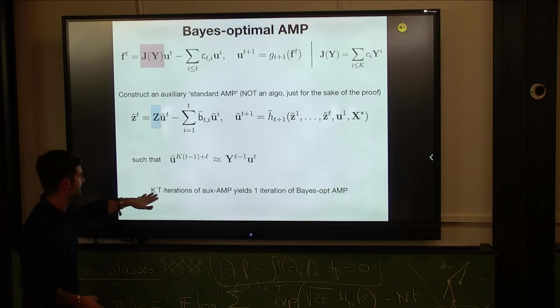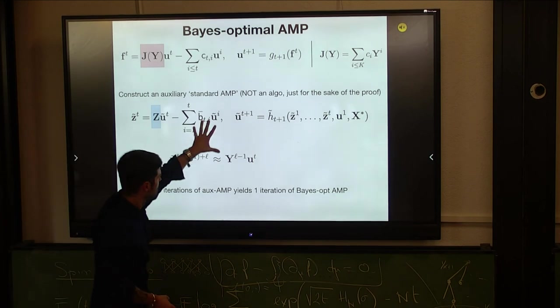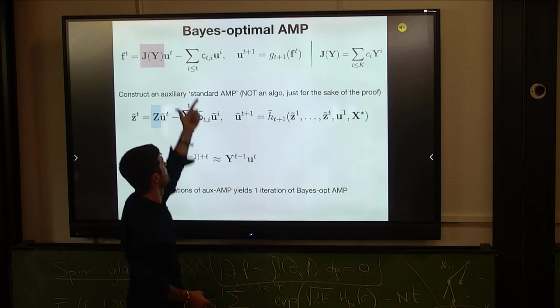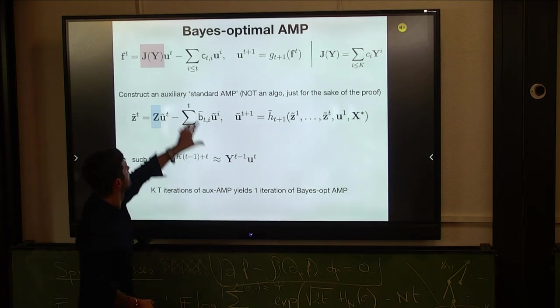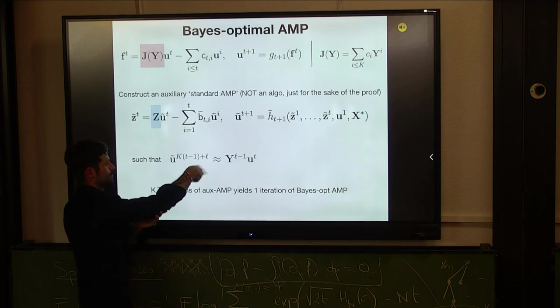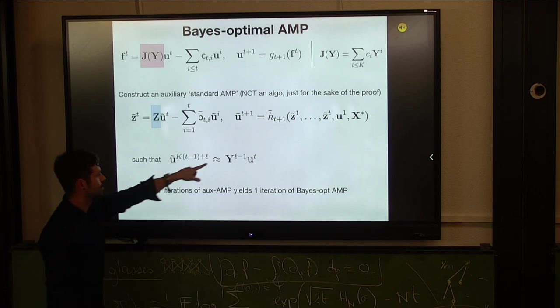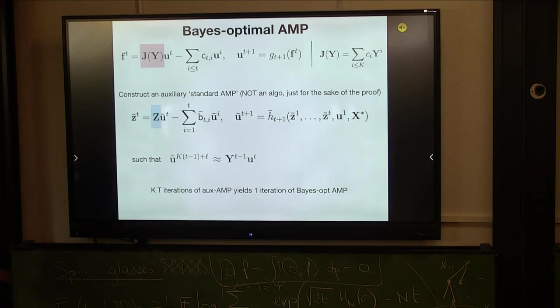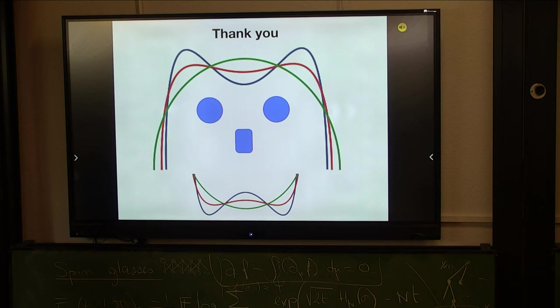So like I said, kt iterations of these complicated iterations there give you essentially information about one iteration of that one. Because here, if the polynomial is of order k, you see that you need to update that a number of times to access all these powers. It's not so important, but there is a nice proof strategy that Marco Mondelli developed.